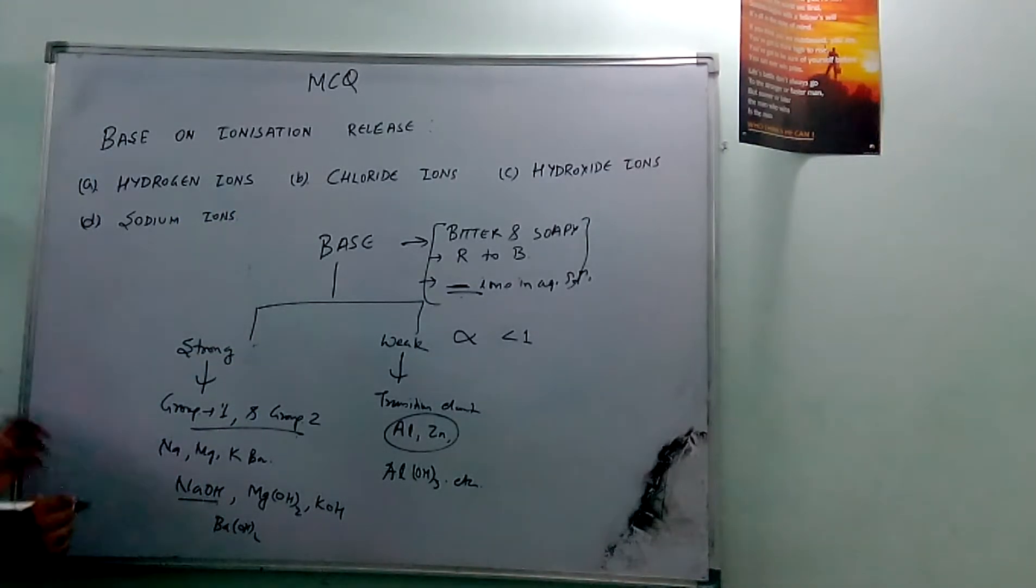Now what we have to conclude is which of the ions base produces on ionization in aqueous solution. Which is the common thing in all the compounds which we have written for strong and weak bases? We will find it out. Hydrogen ions are formed when acid reacts in aqueous solution. Hydrogen ion is produced, so hydrogen ion is not the correct answer. We can leave it.